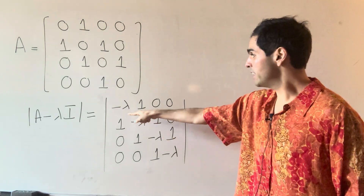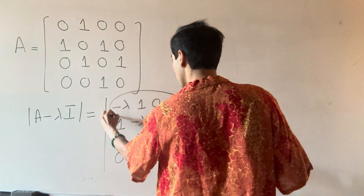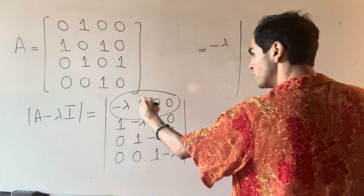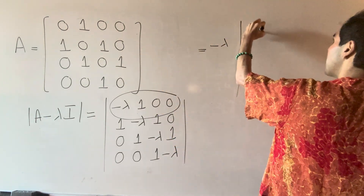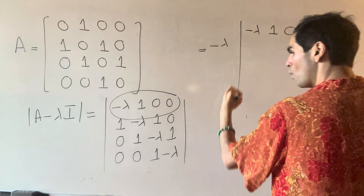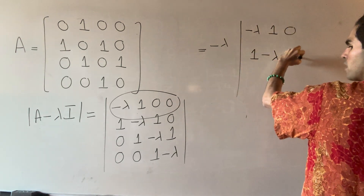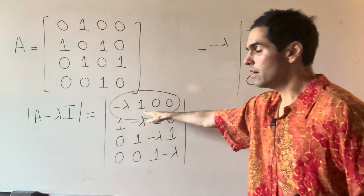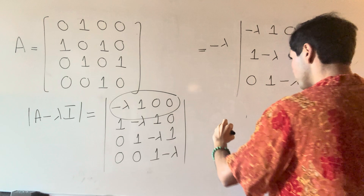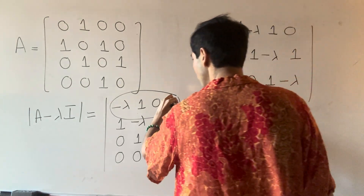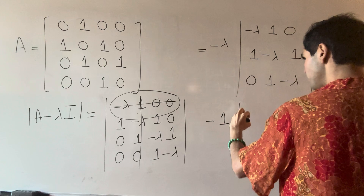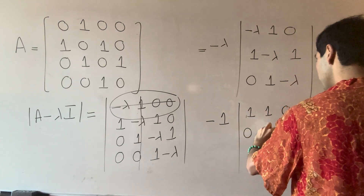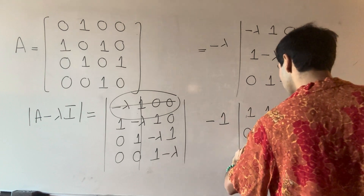And what we can do is expand this along the first row. So this becomes minus lambda times the determinant of the 3x3 minor, minus one times another minor, and then plus another term involving the remaining entries.